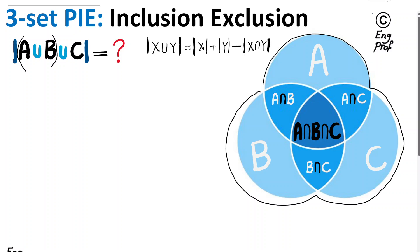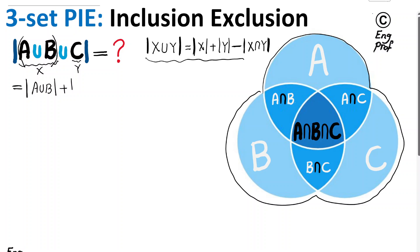Associating A union B as X and C as Y, we can apply the 2-set principle of inclusion-exclusion formula. So we write: cardinality of A union B (which is X), plus cardinality of C (which is Y), minus the cardinality of (A union B) intersect C. That is based on just the 2-set PIE.